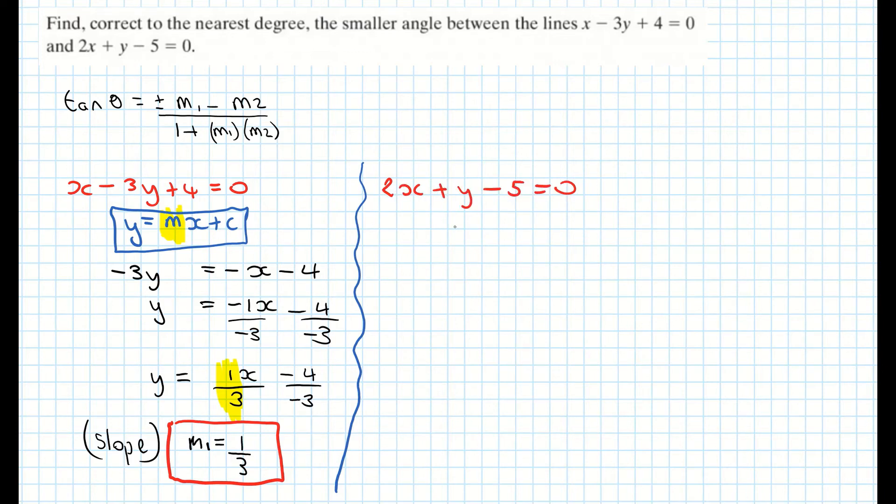So my second equation of the line is written as 2X plus Y minus 5 is equal to 0. Once again I need to write it in the form Y equals MX plus C in order to find the slope.